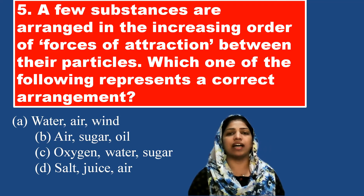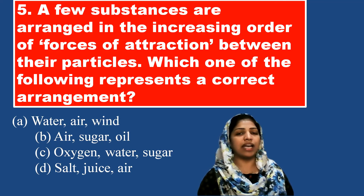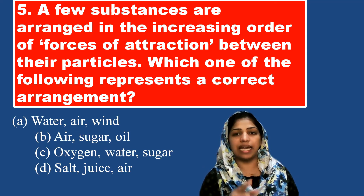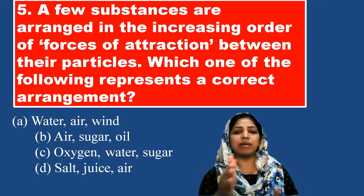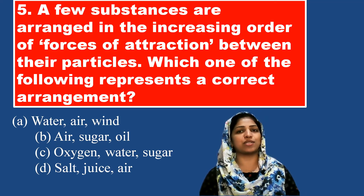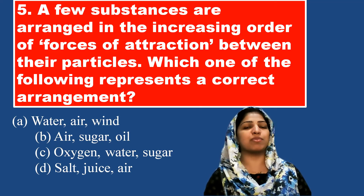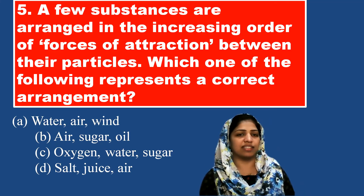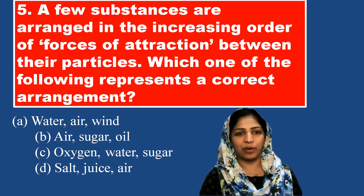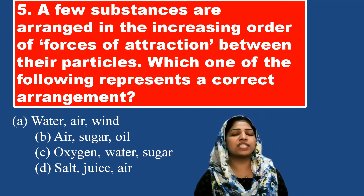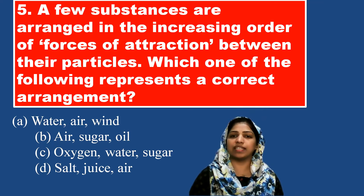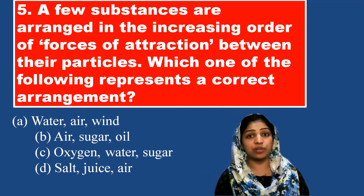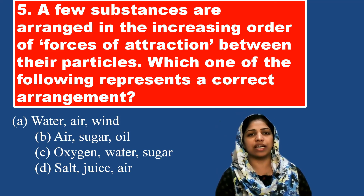Option A is wrong because it uses water incorrectly. If we get a gas — air — then one is correct. Option B is also wrong. Option C: Oxygen is a gas state, then comes water as liquid state, then comes sugar as solid state. This is the correct sequence.